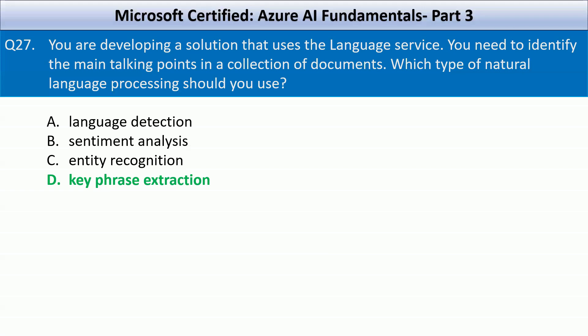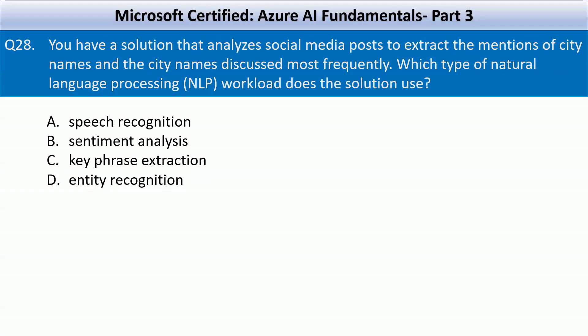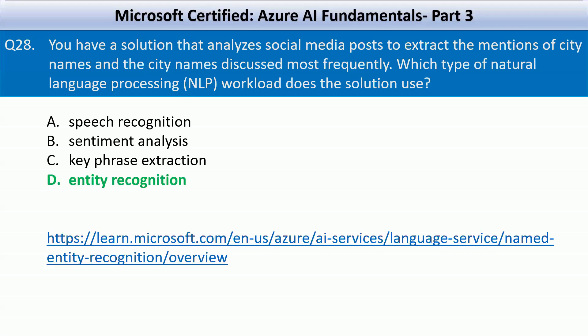Next question: You have a solution that analyzes social media posts to extract the mentions of city names and the city names discussed most frequently. Which type of natural language processing workload does the solution use? Your options are speech recognition, sentiment analysis, key phrase extraction, and entity recognition. The correct answer here is entity recognition, also called named entity recognition.